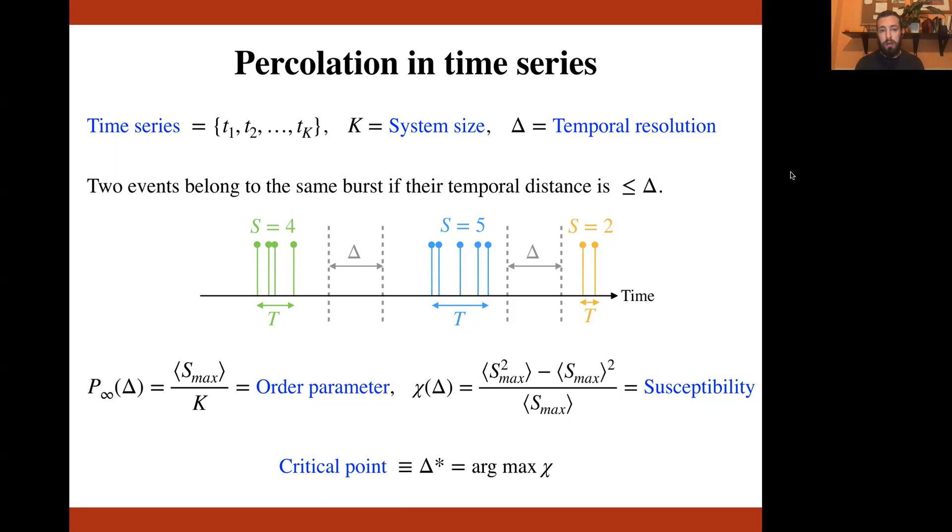We wonder what happens if one studies the burst statistics by varying this temporal resolution. To understand this effect, we study the percolation phase diagrams of the time series. In particular, we study the order parameter defined as the average size of the largest cluster, where the average is over realizations, and its associated susceptibility. We identify the critical point of the percolation transition as the value of the resolution at which the susceptibility is maximized.